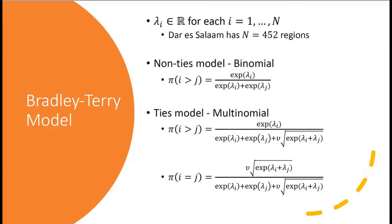If you want to allow for ties, you can say that area i is roughly the same as area j — a similar level of niceness. Then we add a weighted geometric mean term: nu times the square root function here. This allows us to extract extra information from the data. Because we now have three options — area i wins, area j wins, or they're both the same — it becomes a multinomial model.